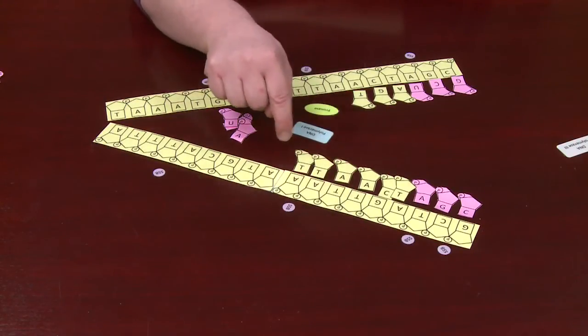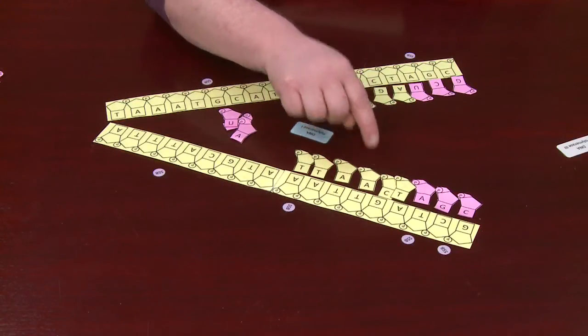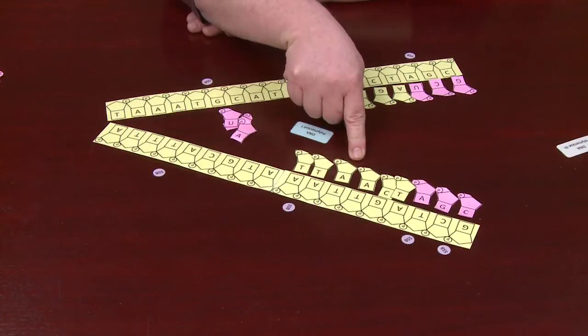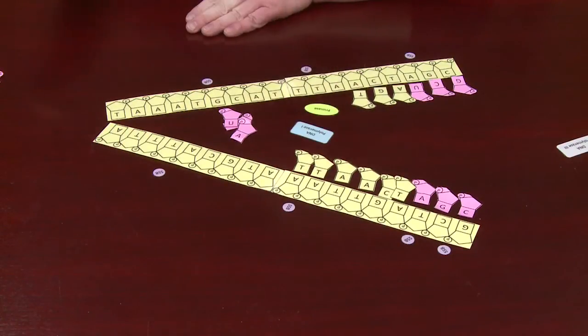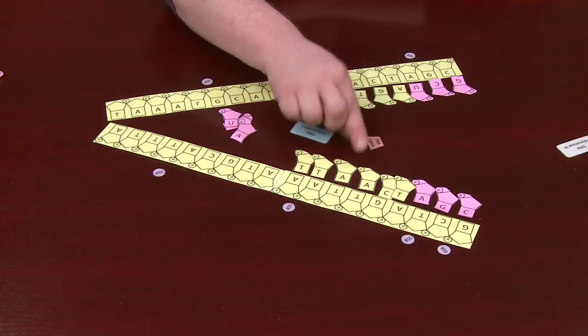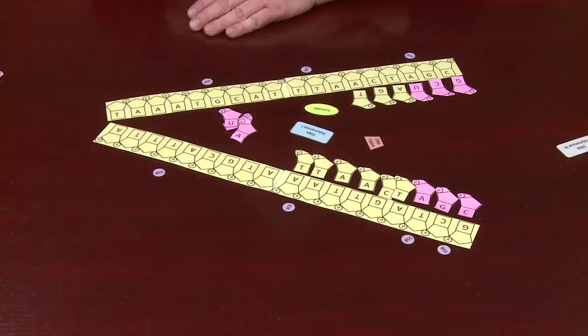Now, the DNA that was put in by DNA polymerase 1 and the Okazaki fragment that was created by DNA polymerase 3 are not attached here. A bond needs to be formed here and that's the job of DNA ligase. It will come in and form a bond between those two stretches of DNA.